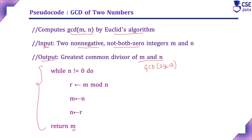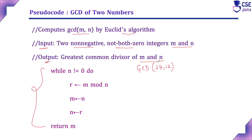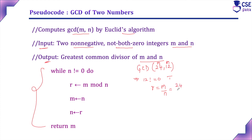Now implement this example with the logic. Here M = 24 and N = 12. First, check: N not equal to zero — 12 is not equal to zero, so condition is true. Execute the three instructions: R = M mod N = 24 mod 12 = 0, so R = 0. Then assign N to M, so M = 12. Assign R to N, so N = 0.